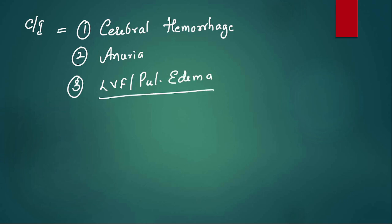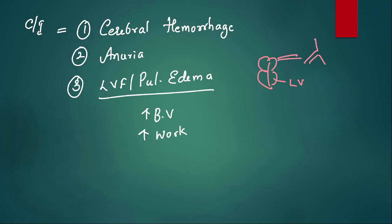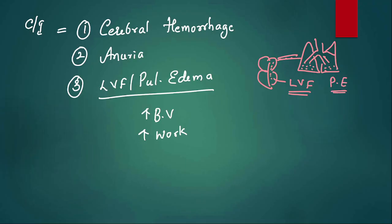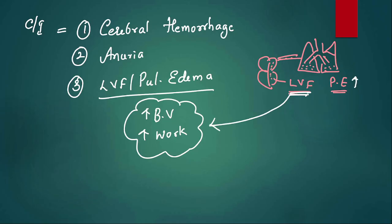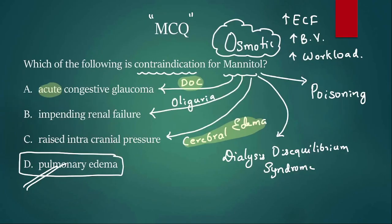Why is mannitol contraindicated in pulmonary edema? Because mannitol increases blood volume and workload on the heart. In left ventricular failure, the left ventricle cannot work properly — pressure backs up into the lungs and there is fluid accumulation in the lungs, which is pulmonary edema. If you give mannitol in that state, it will increase blood volume, increase cardiac workload, and worsen the pulmonary edema. That is why it is contraindicated. The answer for this question is option D, pulmonary edema.